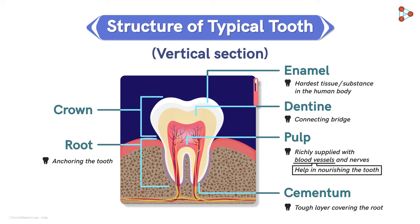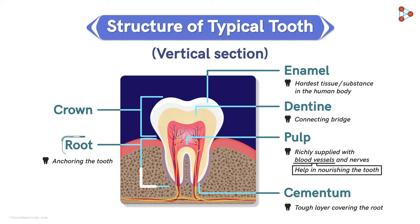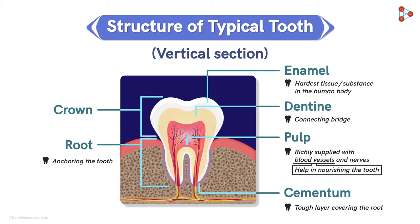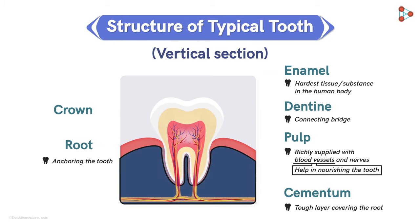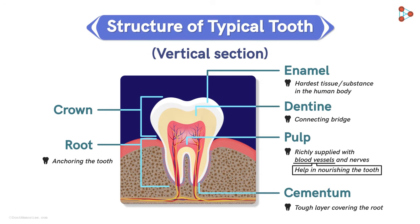So this is the structure of a typical tooth. The crown is the topmost region that is usually visible to us, consisting of an extremely hard protective layer called the enamel. Below this is the dentine, and just below the dentine comes the root, which has the fleshy pulp richly supplied with blood vessels and nerves. The cementum covers the root from below, and this root is embedded in the jaw bone, which is covered on top with the gum.